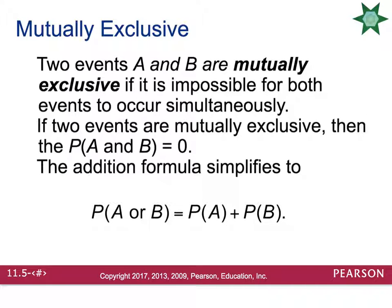Mutually exclusive is a term you need to know. Two events A and B are mutually exclusive if it is impossible for both events to happen simultaneously. For example, it would be impossible to have an even and an odd number simultaneously — that would be mutually exclusive. So if two events are mutually exclusive, then the probability of A and B is 0, and you can leave off that subtraction term from the OR formula.